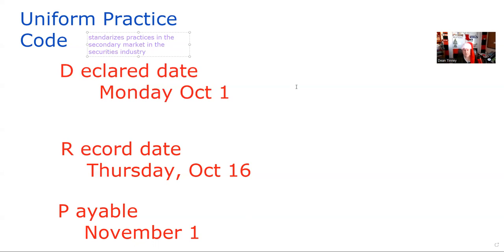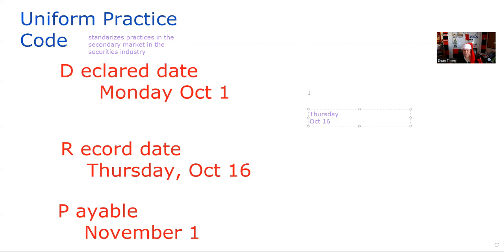If we look at the shareholder list on Thursday, October 16th, you should know from the uniform practice code that regular way settlement is T plus two. So it takes two business days to show up on the shareholder list to get this dividend.